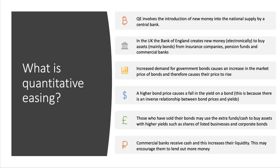Quantitative easing is where essentially the central bank introduces new money into the national supply by creating new money electronically. They use this money to buy assets — mainly bonds. They buy those government bonds from commercial banks, from insurance companies, from pension funds — from people and institutions who hold bonds. That increases the demand for bonds in the bond market.